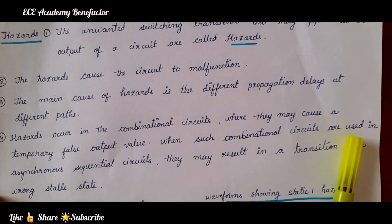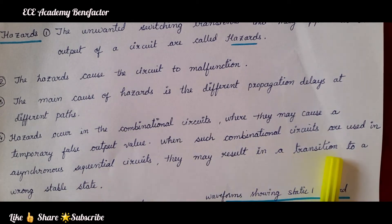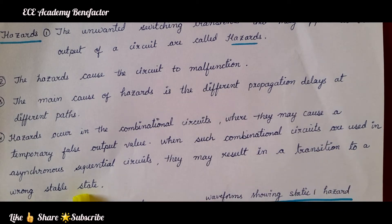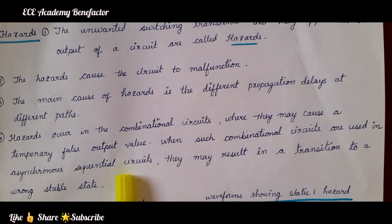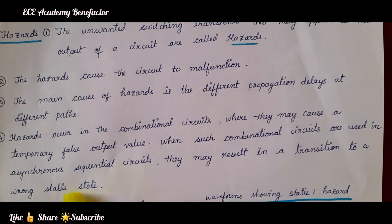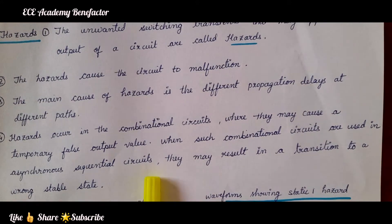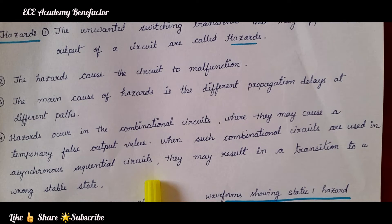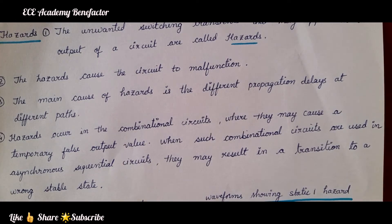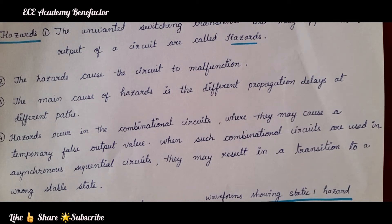When such combinational circuits are used in asynchronous sequential circuits, they may result in a transition to a wrong stable state. For example, if an asynchronous sequential circuit is designed to give a stable state of 1, but due to hazards in the combinational circuit it is showing the state as 0, the circuit is not giving the appropriate result — it results in malfunctioning.